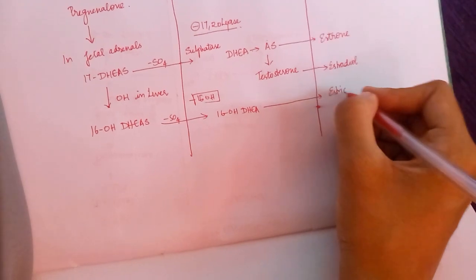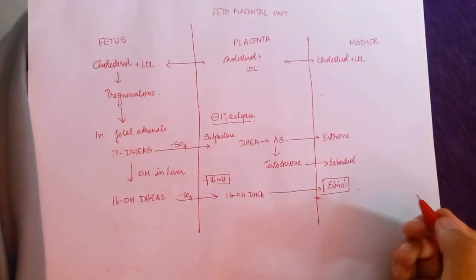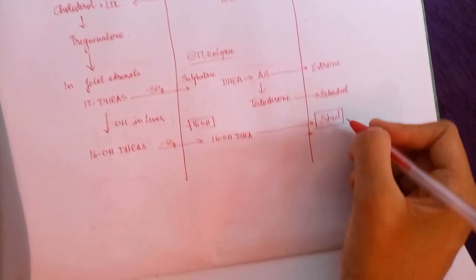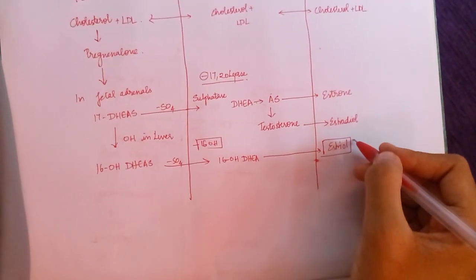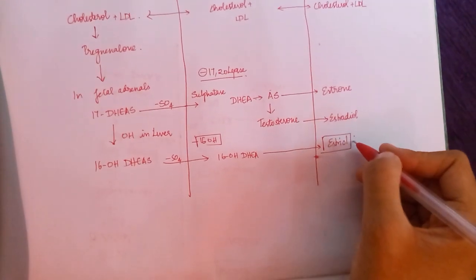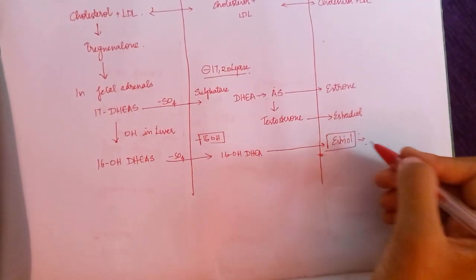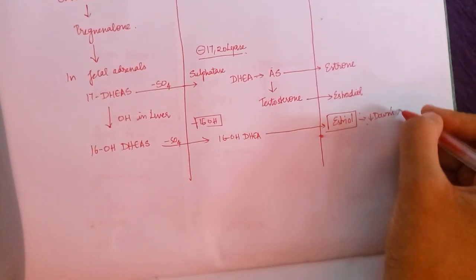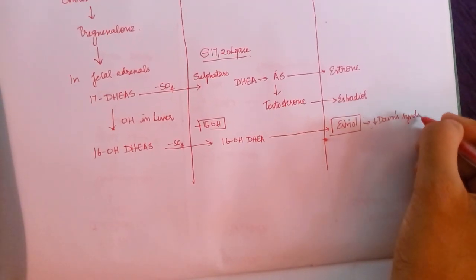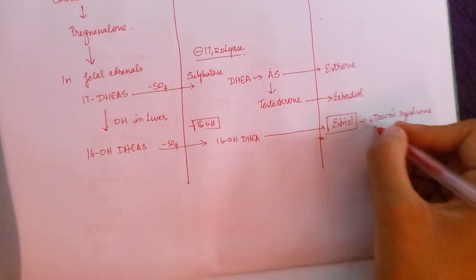This substrate forms estriol. Estriol is used to assess the pregnancy and is important as this value is lower in cases of Down syndrome and hydatidiform mole.